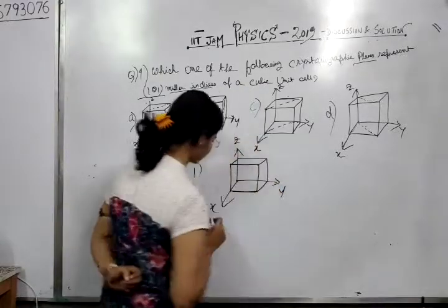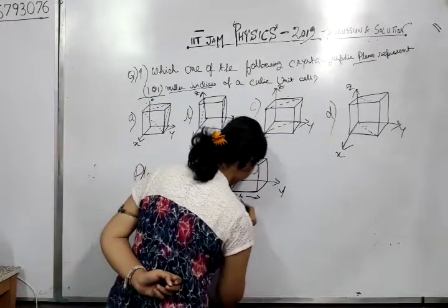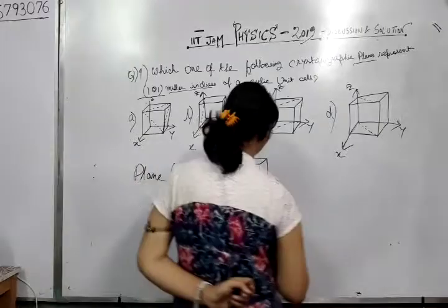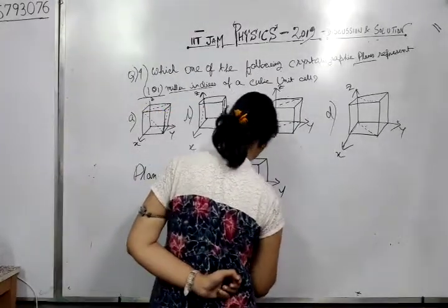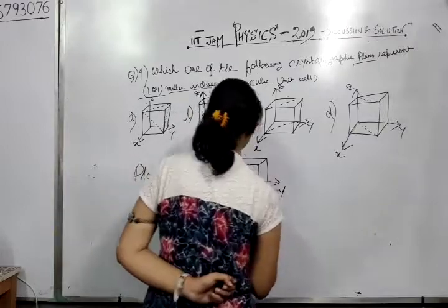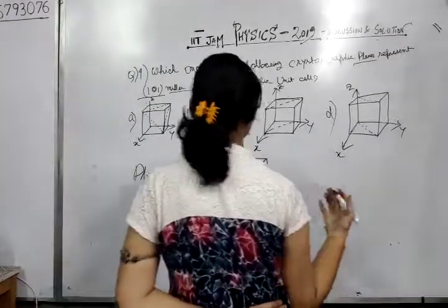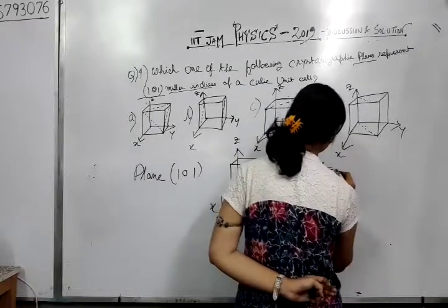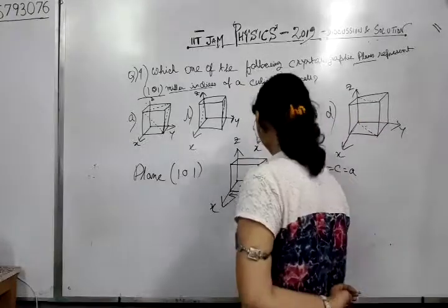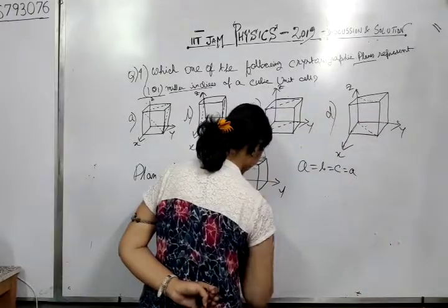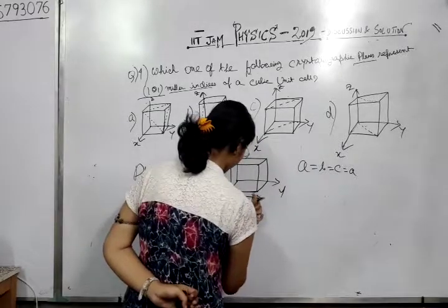Here this is b. This line on the y-axis, the length of this side is b. We can write this for simple cubic. So here we can write a equals to b equals to c equals to a. The size of all sides of this cube is the same.